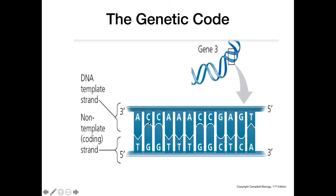On a strand of DNA we have our template strand and the non-template, which is our coding strand. The coding strand is the one that has the same sequence as our mRNA molecule, but with T's replaced by uracils. The template strand is what the transcription machinery reads to produce a complementary strand of mRNA, which — since it's complementary — will have the same sequence as the coding strand but with thymines replaced by uracils.